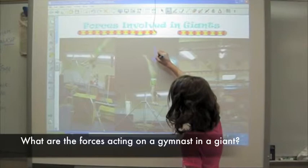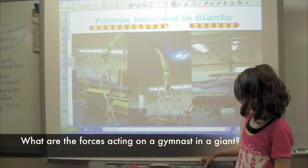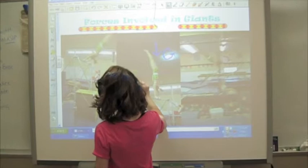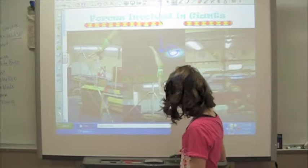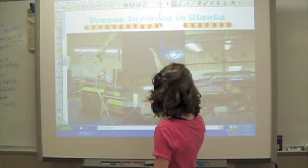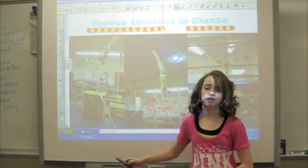First we have the gravity. That's what makes me fall. Then we have air resistance throughout the giant. We also have friction between my hands and the bar. The bar is pushing me out of the bar.